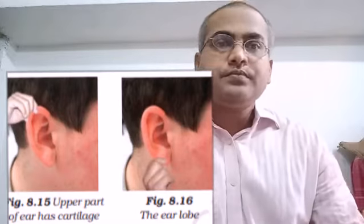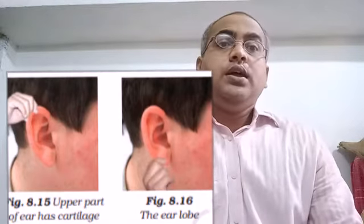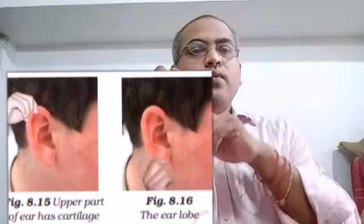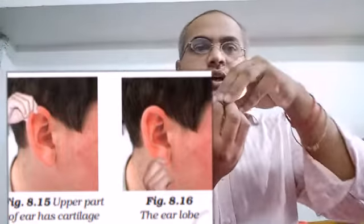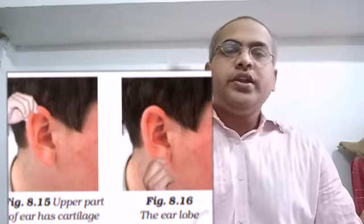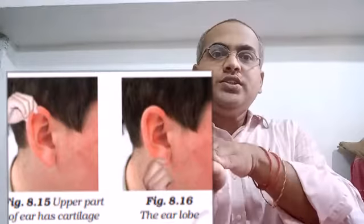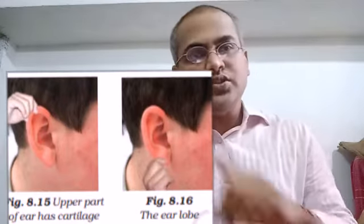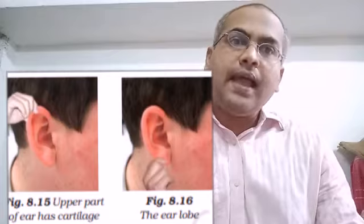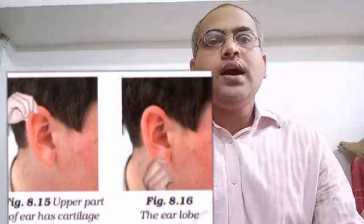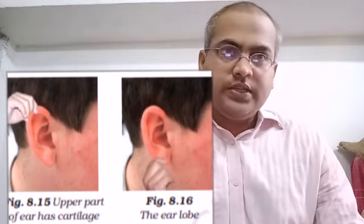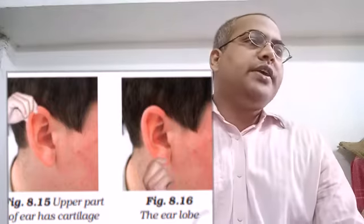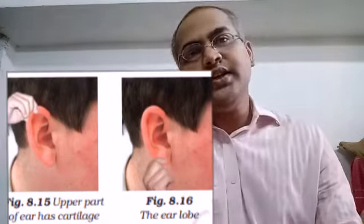Next is the gliding joint. Here, one bone sits on top of another and they glide or slip on each other. The wrist and the ankle are examples of gliding joints. These are the different types of joints present in our body.